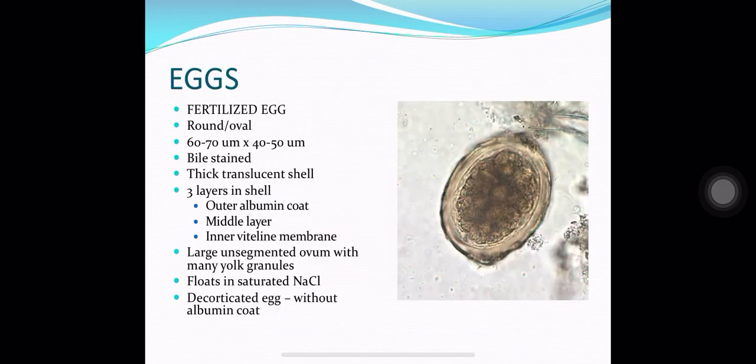There are two types of eggs released by Ascaris Lumbricoids: fertilized eggs and unfertilized eggs. The fertilized eggs are round or oval in shape, 60 to 70 micrometers long by 40 to 50 micrometers wide. They are bile stained and have a thick translucent shell with three layers: the outer albumin coat, the middle layer, and the inner vitelline membrane. Inside is a large unsegmented ovum with many yolk granules. Fertilized eggs float in saturated solution of common salt. If the outer albumin coat is absent, it is called a decorticated egg.